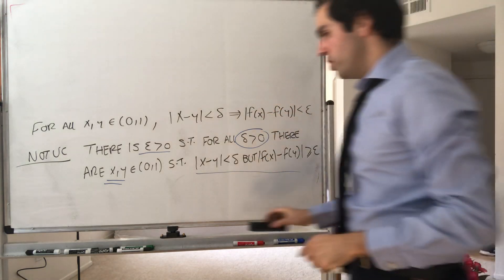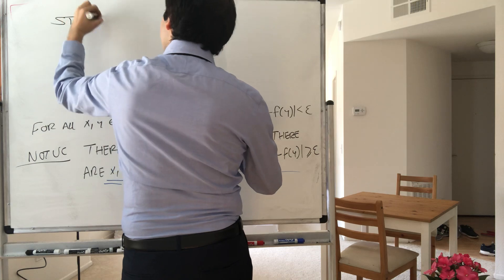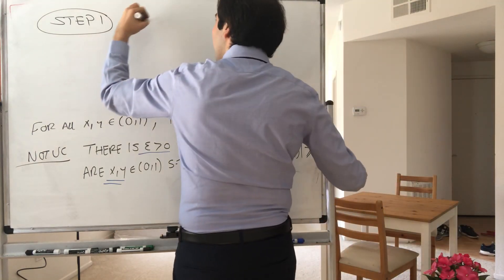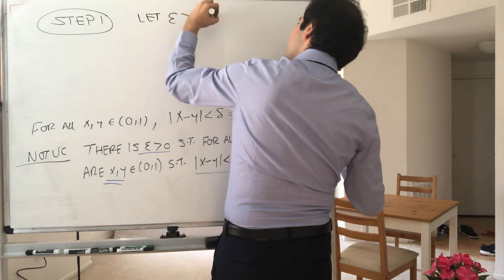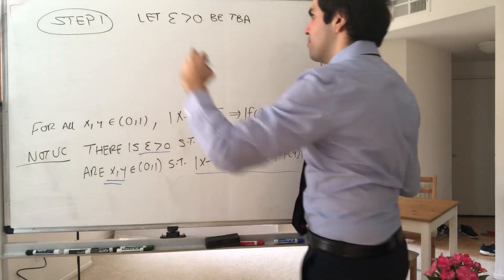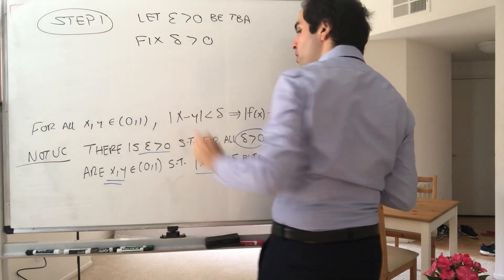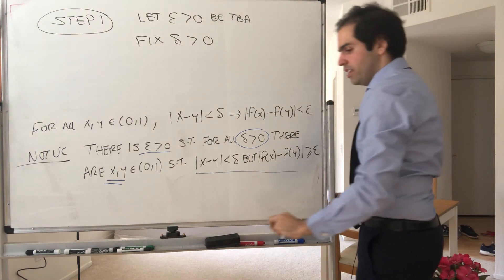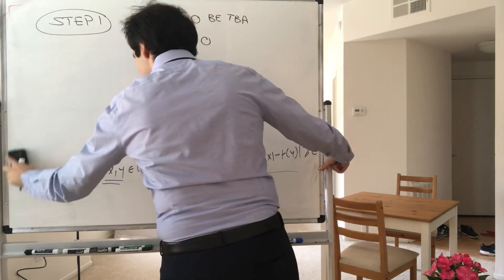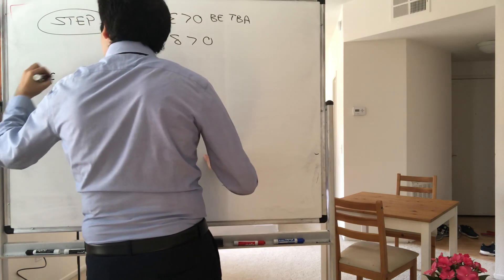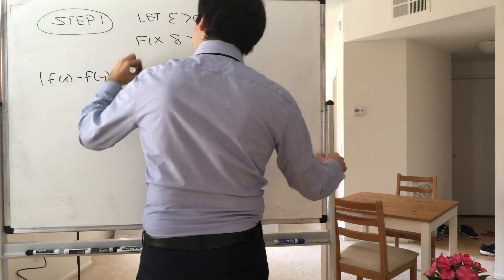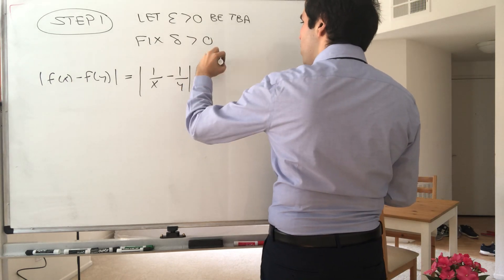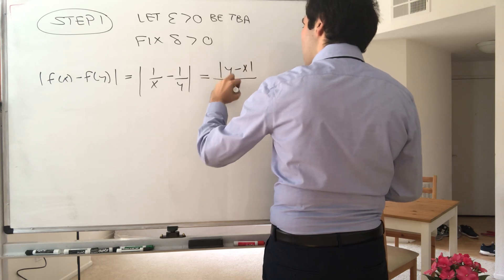Step one — scratch work. Everything except the last step is scratch work. Let epsilon be to be announced, and let's fix delta. Our goal is to find x and y. Let's focus on the key inequality: f(x) minus f(y), which by definition is 1 over x minus 1 over y. Putting on a common denominator, this is |y minus x| over |xy|.